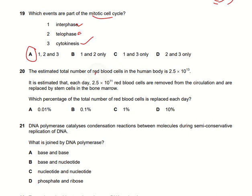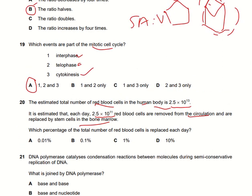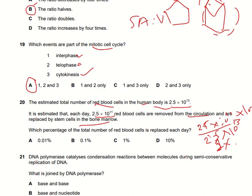The estimated total number of red blood cells in the human body is 2.5×10¹³. Each day, 2.5×10¹¹ red blood cells are removed and replaced by stem cells. To find the percentage replaced each day: (2.5×10¹¹ ÷ 2.5×10¹³) × 100 = 1%. So 1% of the total red blood cells are replaced each day. Meet you in the next chapter — stay tuned.